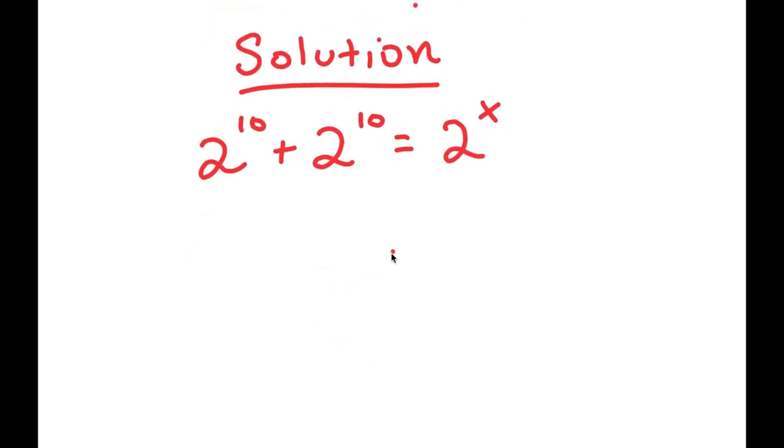For my solution, I'm going to first start by rewriting my equation: 2 to the power of 10 plus 2 to the power of 10 is equal to 2 to the power of x. To solve this, I'm going to first factor out 2 to the power of 10 from my left-hand side.